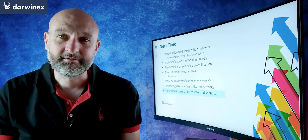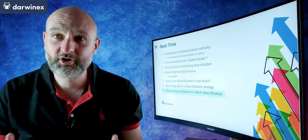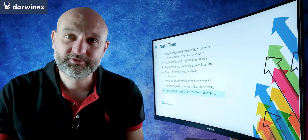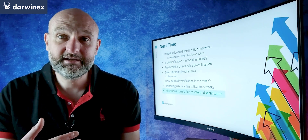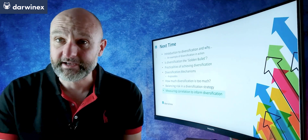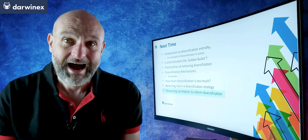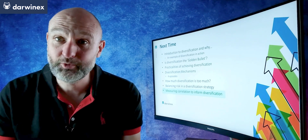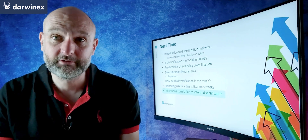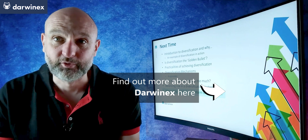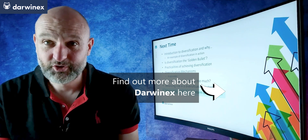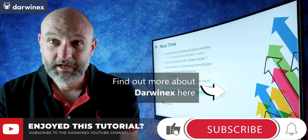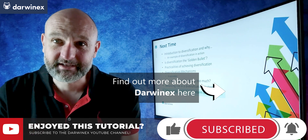We're now approaching the end of this mini-series, but in the next episodes I'm going to be looking at how to measure correlation, which is critically important when considering how to diversify your portfolio. You'll need some indication of how correlated the assets you're trading are, how correlated adjacent time frames are, and how correlated each of your trading strategies are to each other. Based on this information you can then make logical decisions about how to enact that portfolio diversification. If that episode is already available, you'll see it top right. Please do remember to give me a thumbs up, and until next time, trade safe.